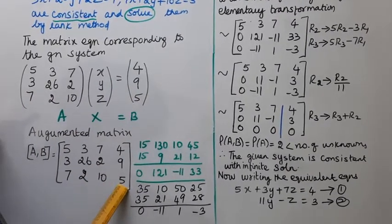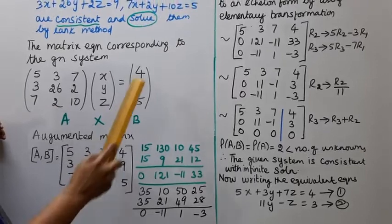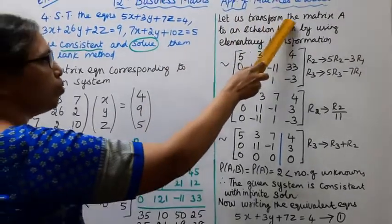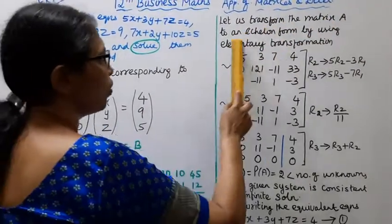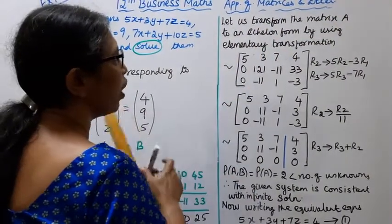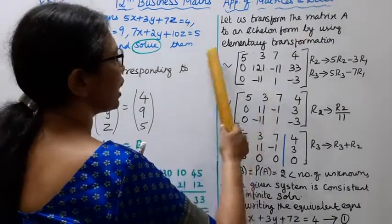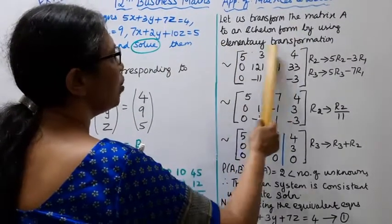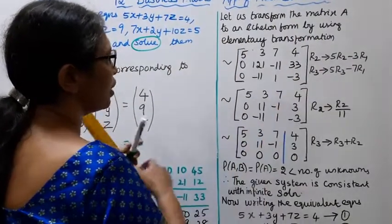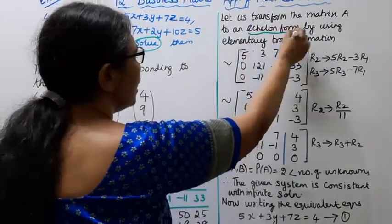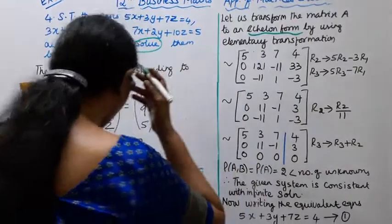Now let's transform the augmented matrix to echelon form by using elementary row transformations.